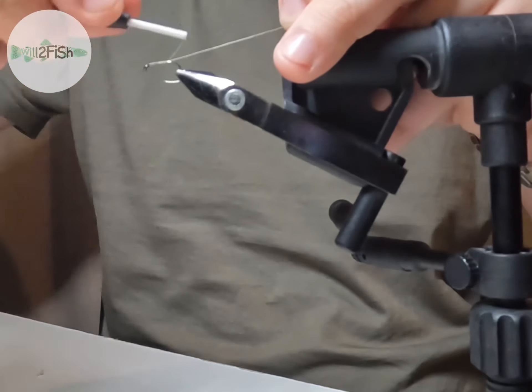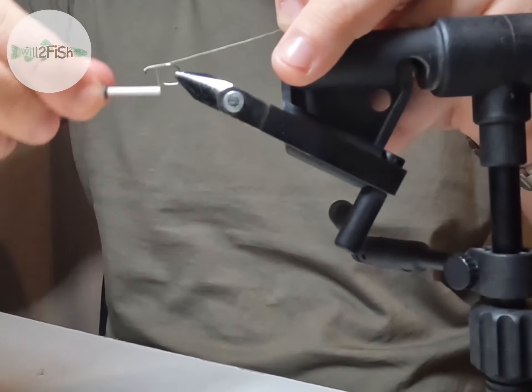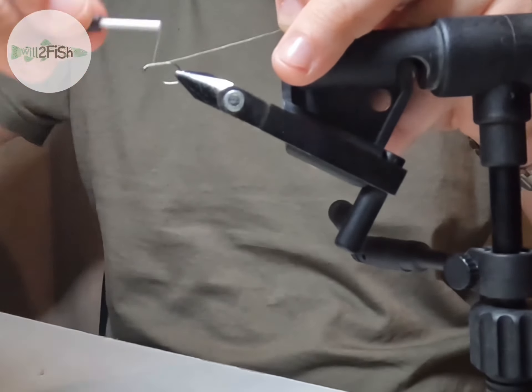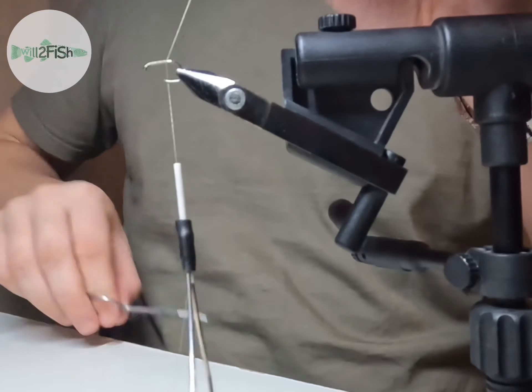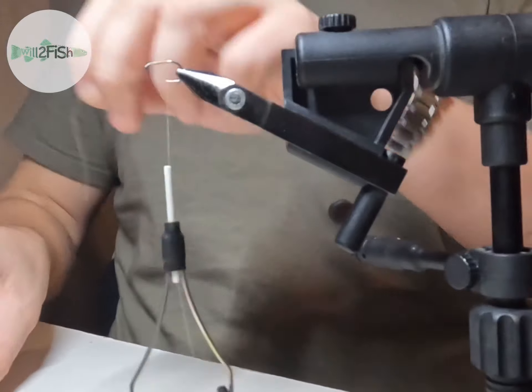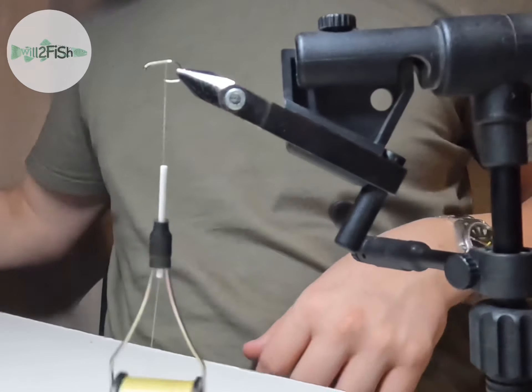Here I'm just tying on the yellow thread, just a simple quick body as it's just an egg pattern, you don't need to do too much here. Just fill most of the fly up, cut it off, and then the main part is getting the yarn on.